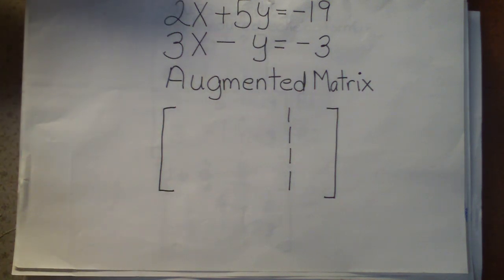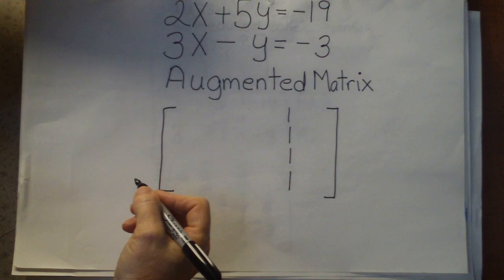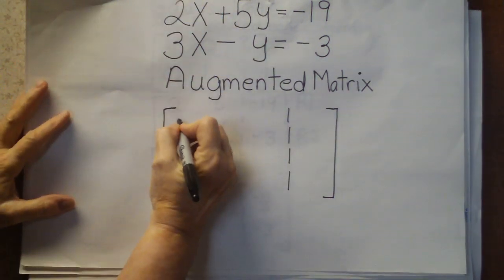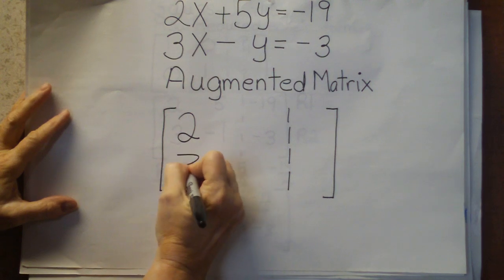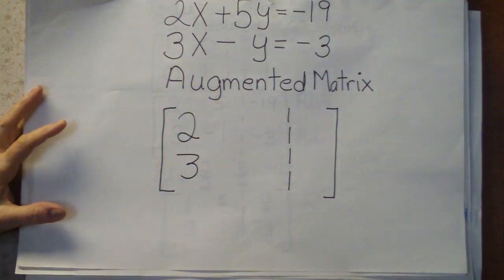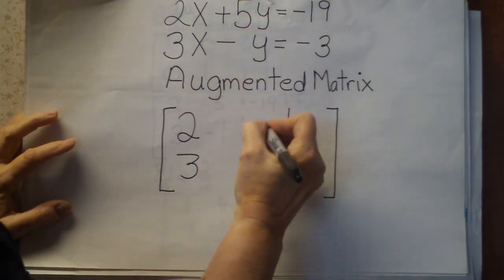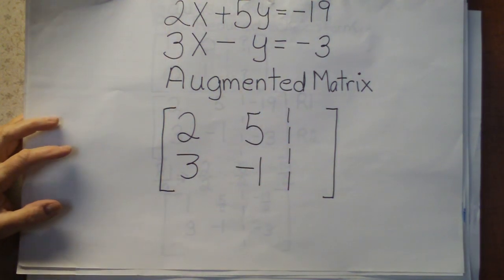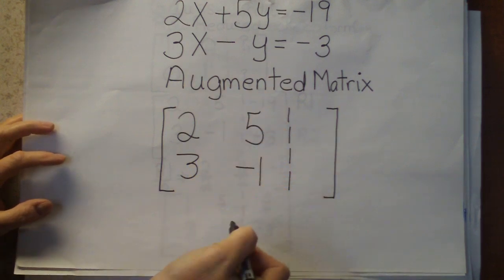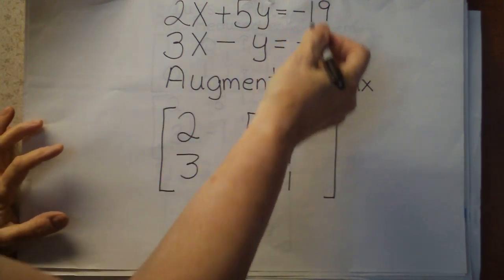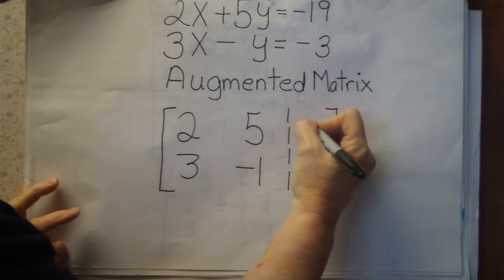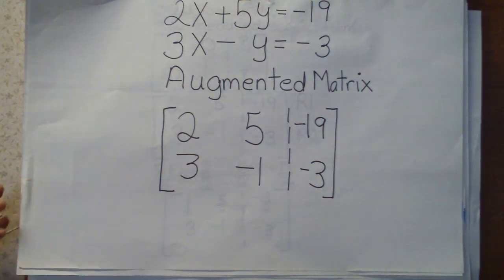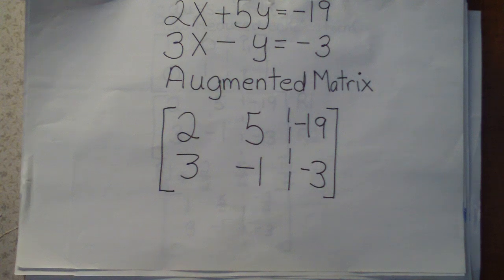And all the augmented matrix is, is stripping away the variables. So we're going to have our first column as 2 and 3. We think of that as the x column. And then 5 and minus 1. And we think of that as the y column. And then the little dashed lines just separates that from the constants, minus 19 and minus 3. So we begin with the augmented matrix.